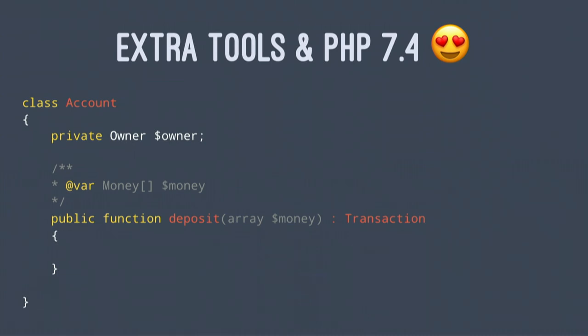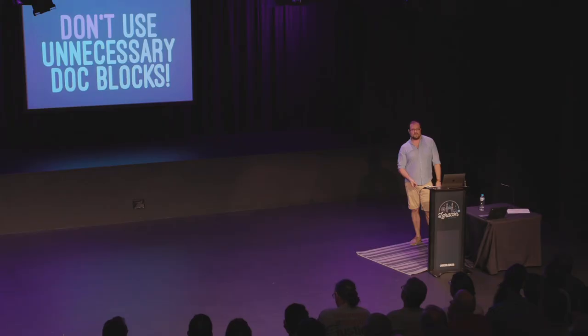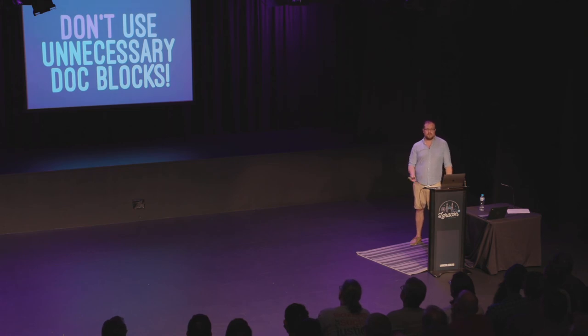In PHP 7.4, you notice we get to clean up that owner variable, use the native function in the language, and get rid of the noise. Don't use unnecessary doc blocks — if you can avoid it. The least amount of code in a file is probably a good thing. If you've got language features, use them.